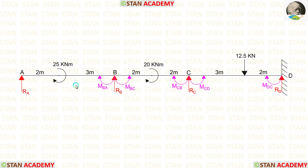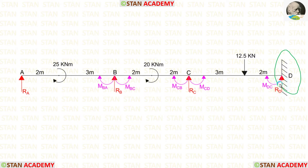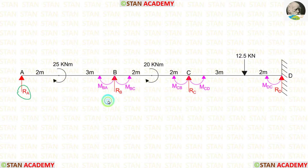In this beam, we have to find 5 moments in total. At point A, there will be no moment because it is the simply supported end. At point B, there are 2 moments: MBA and MBC. At joint C, there are 2 moments: MCB and MCD. At point D, there is a fixed support, so there will be a moment MDC. We also have to find 4 vertical reactions: RA, RB, RC, and RD.